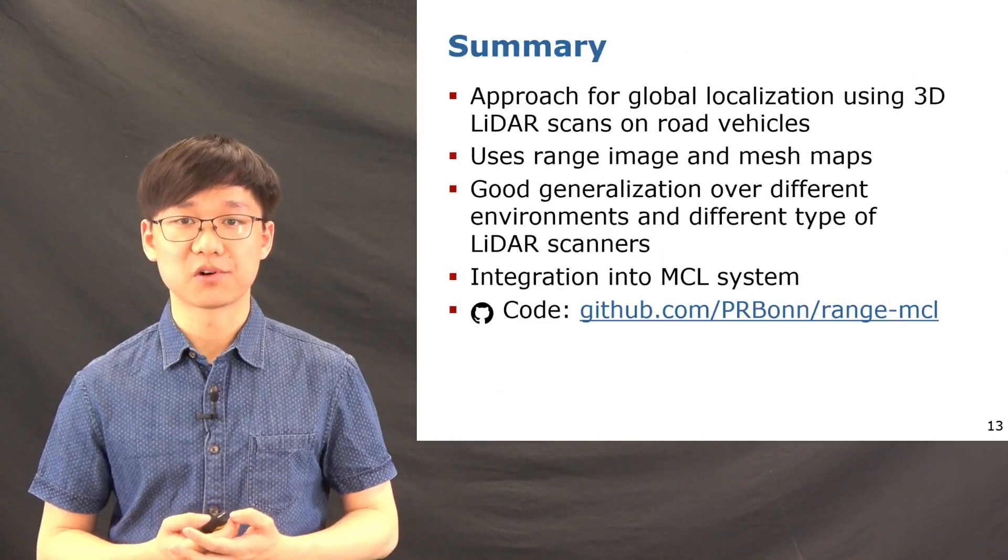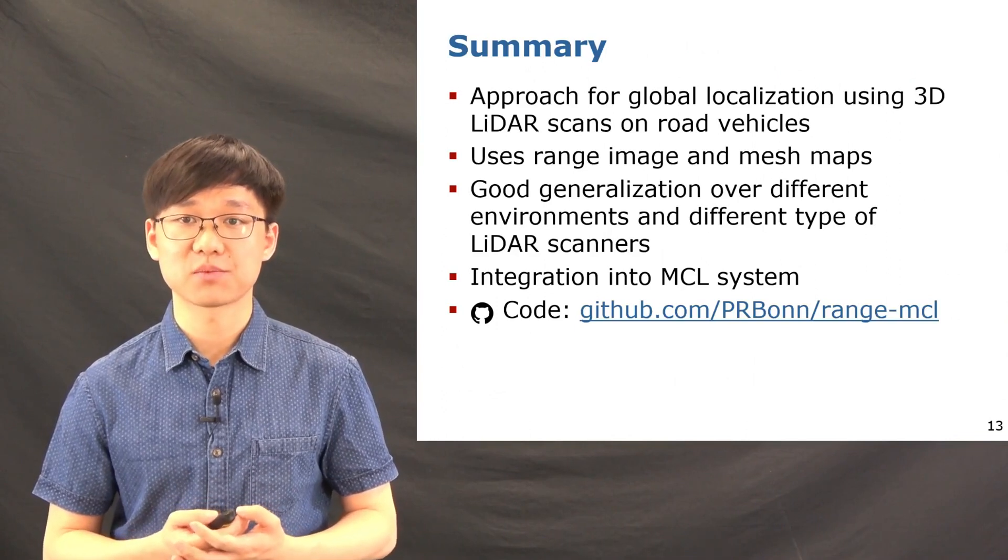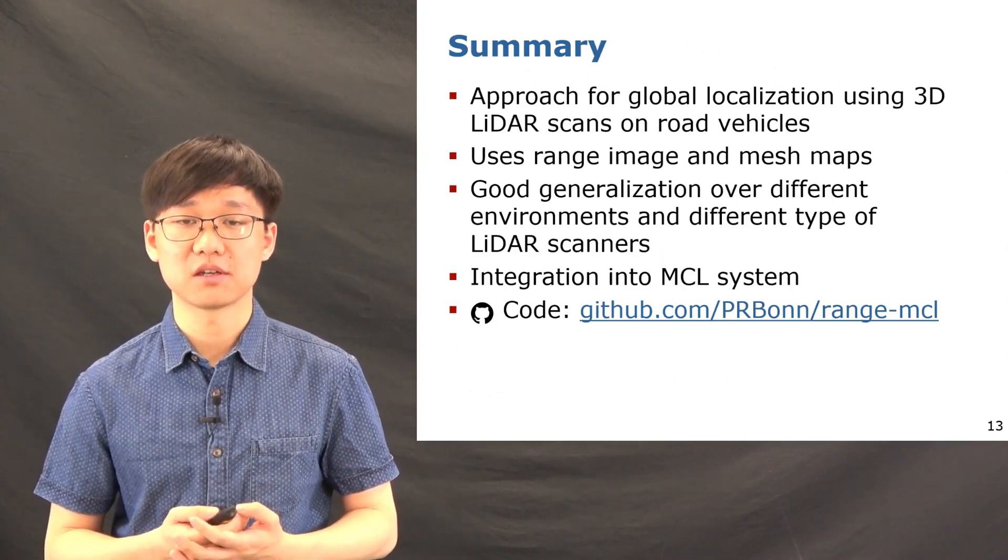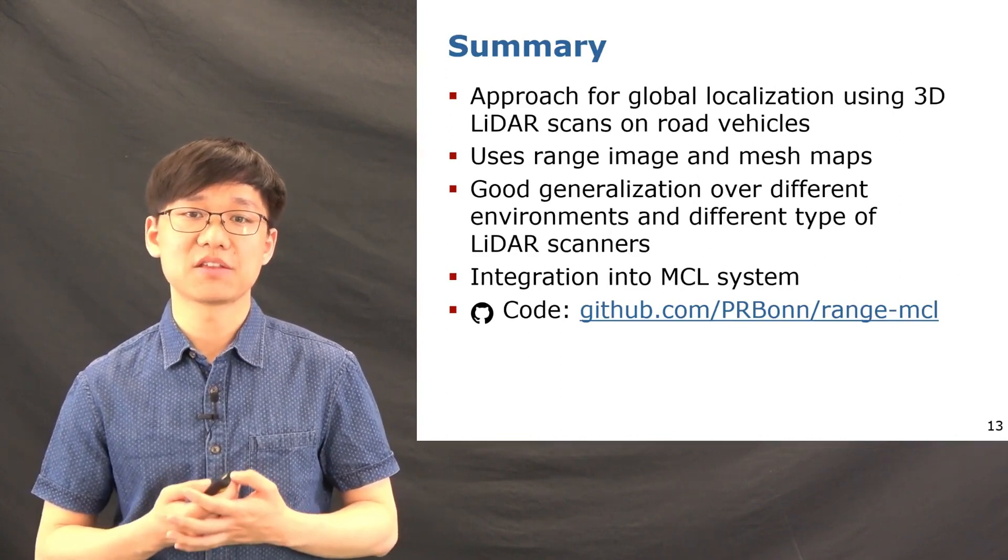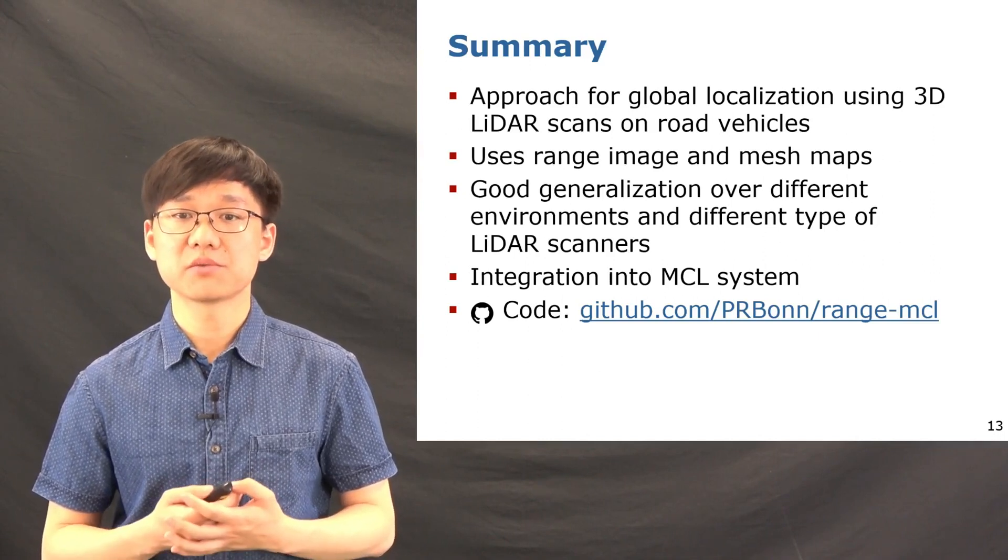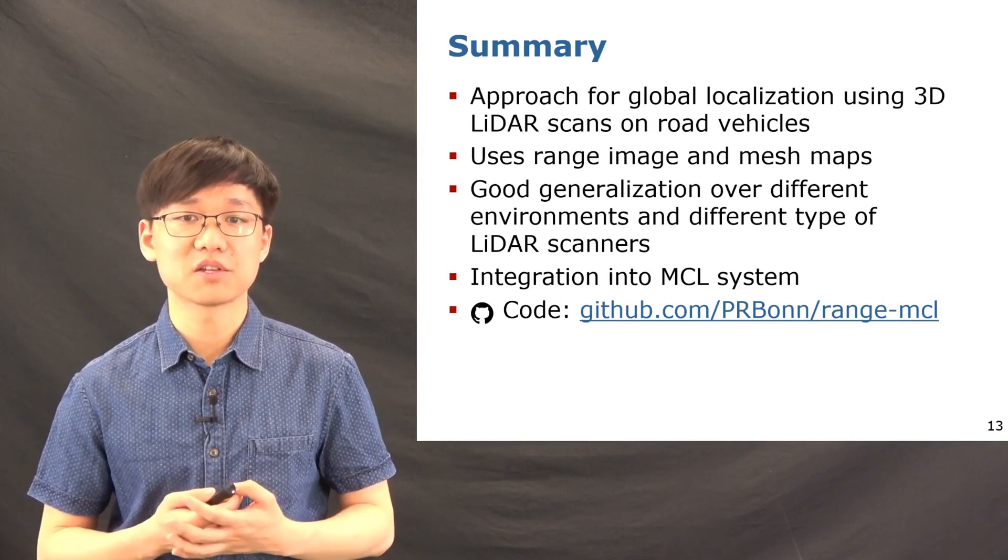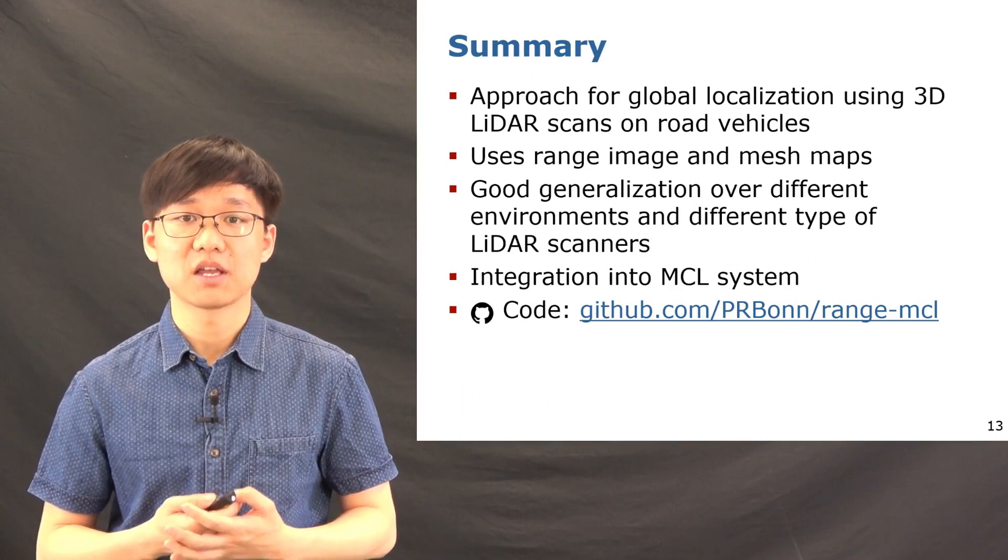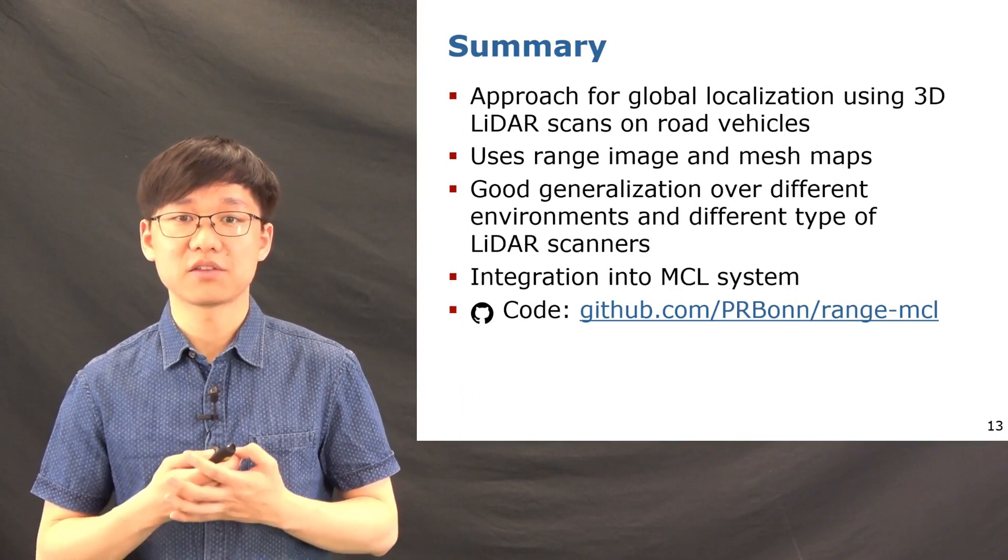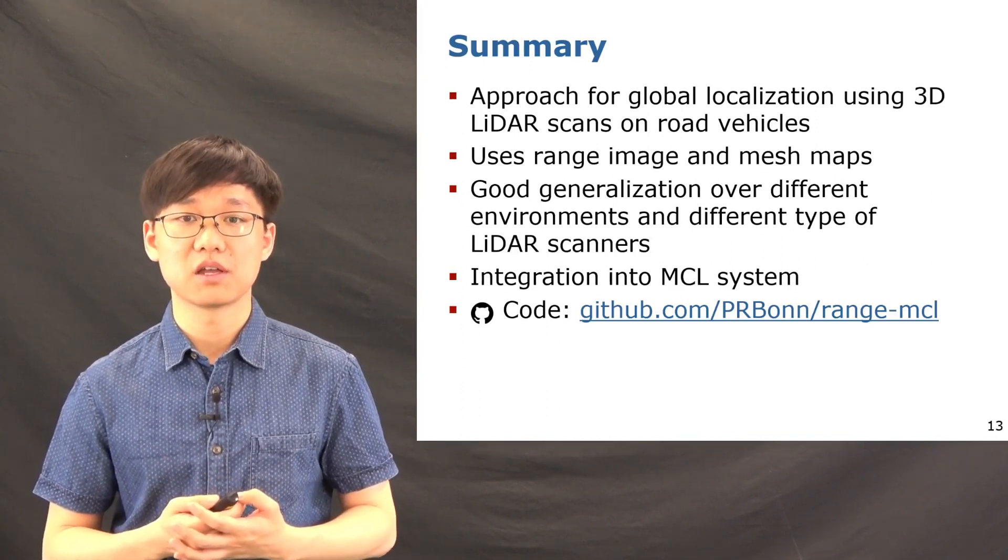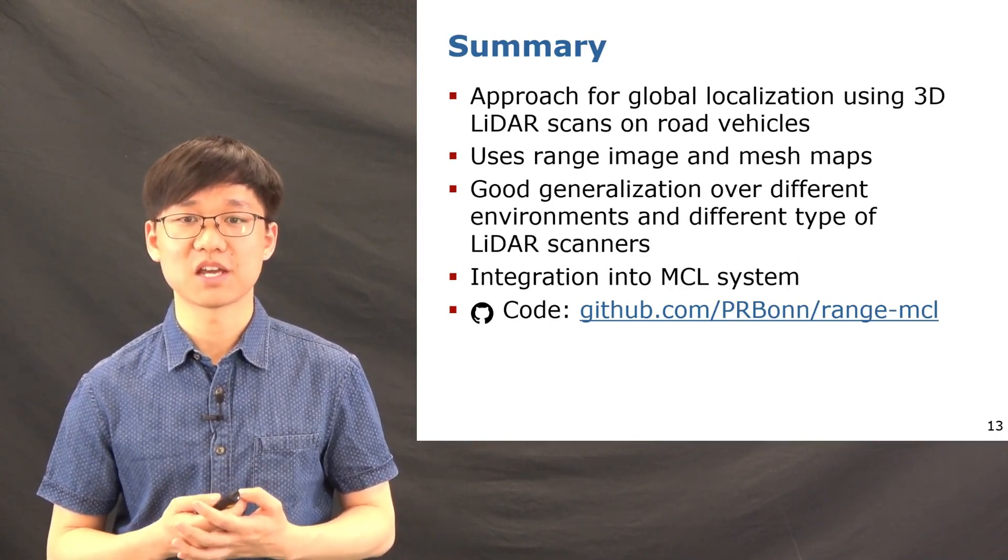To summarize this work, first we proposed an approach to achieve global localization using only 3D LiDAR scans, without taking other information into account. We proposed a novel observation model that exploits range images and triangular mesh maps. The experimental results show that our approach generalizes well over different seasons and different environments with different types of LiDAR scanners. In the end, we successfully integrate our approach into the Monte Carlo localization and achieve good global localization results. The code of our approach has been released on our GitHub. Please feel free to give a try. Thank you for your attention.